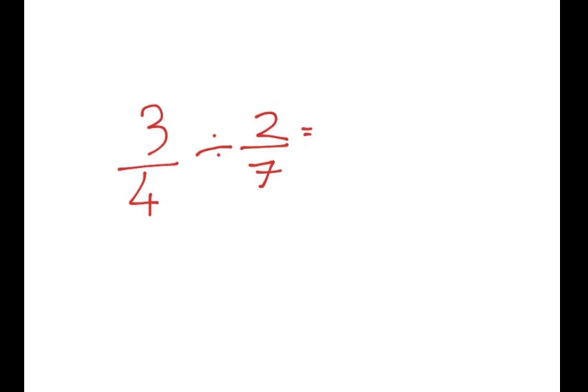Here's another one for you. 3 over 4 divided by 2 over 7. Feel free to pause the video and have a go yourself. Now the way to do this is very similar to the previous ones. We leave the first fraction, 3 over 4. Change divide to times, and we flip the second fraction. So we get 7 over 2.